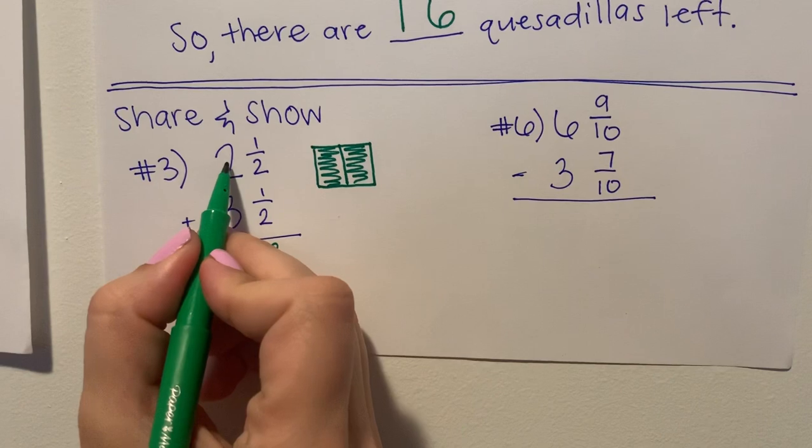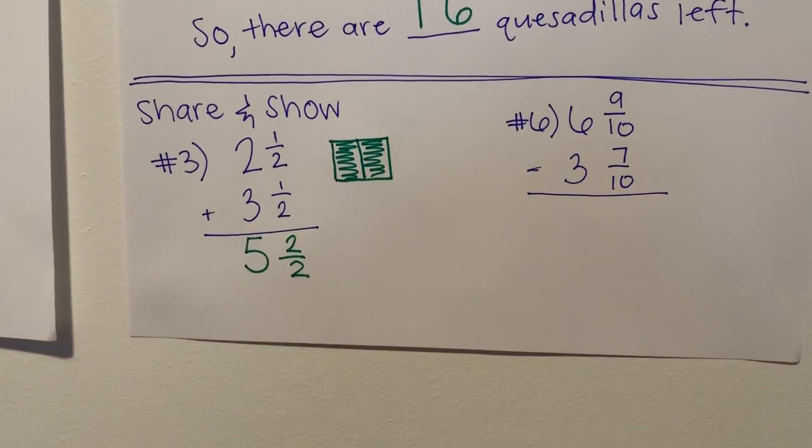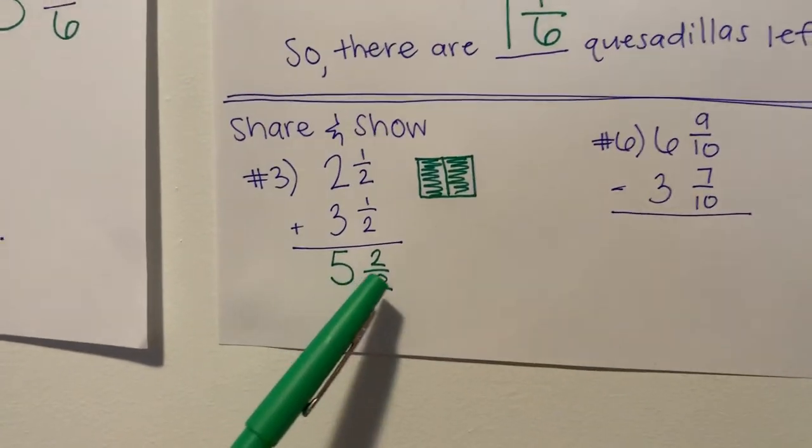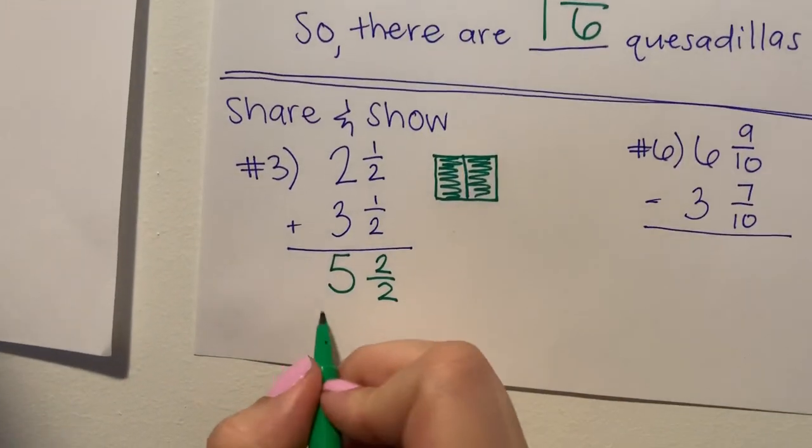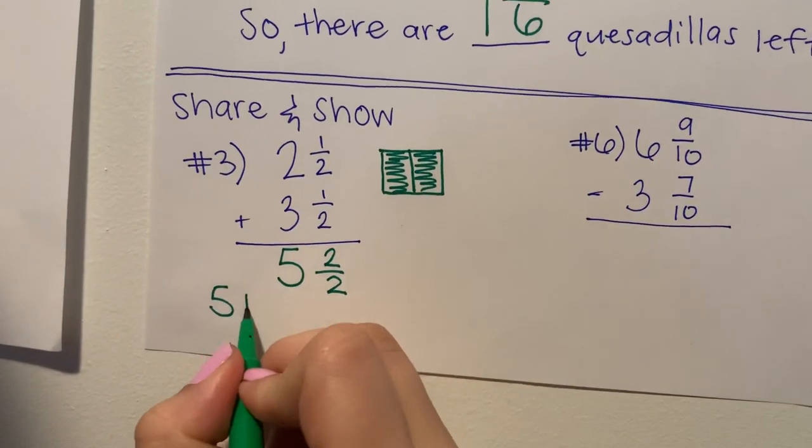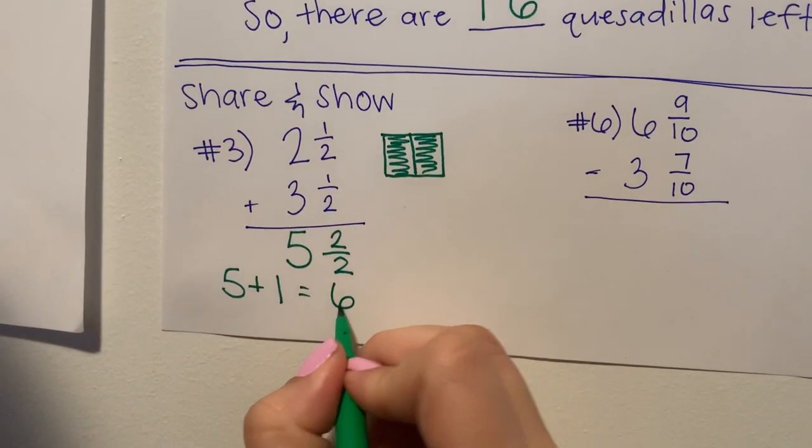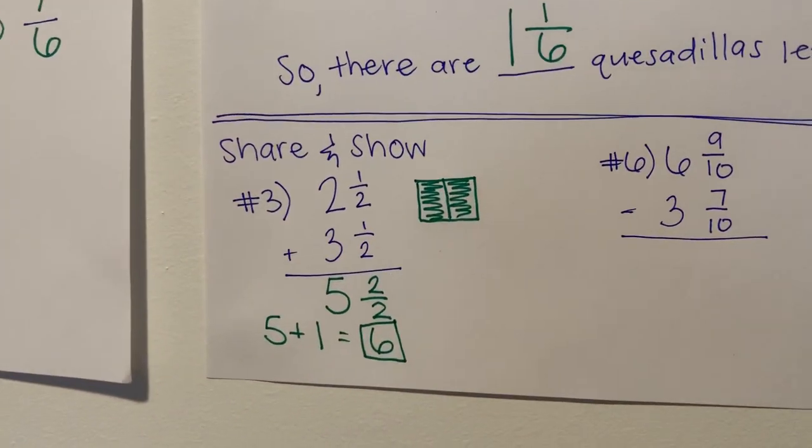And then I'm going to add my whole number parts, which is two plus three. I know two plus three equals five. I'm not going to stop here though, I'm going to make sure I rename the sum, because I know that two halves is actually equal to one whole. So this is really like saying five plus one. And I know that five plus one equals six. So your answer for number three should be six.